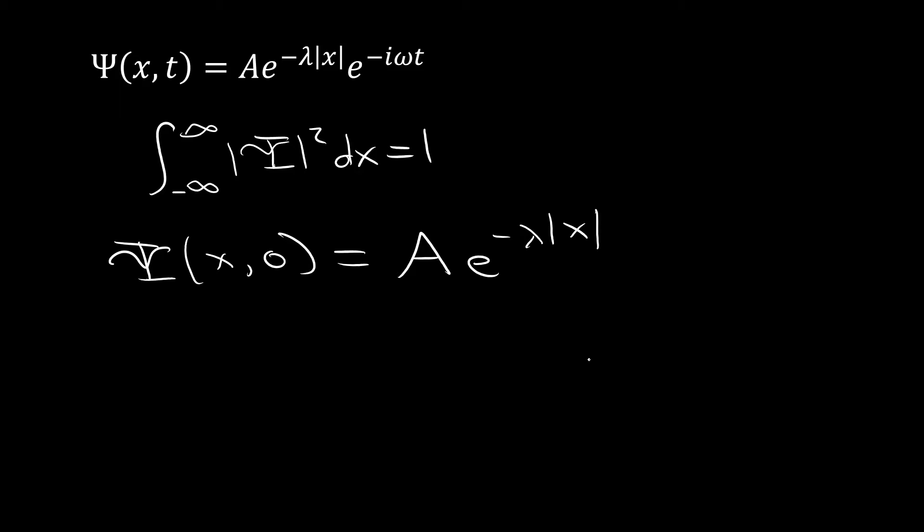Now we can take the magnitude squared of this. And we're just going to end up getting magnitude of A squared e to the minus 2 lambda absolute value of x.